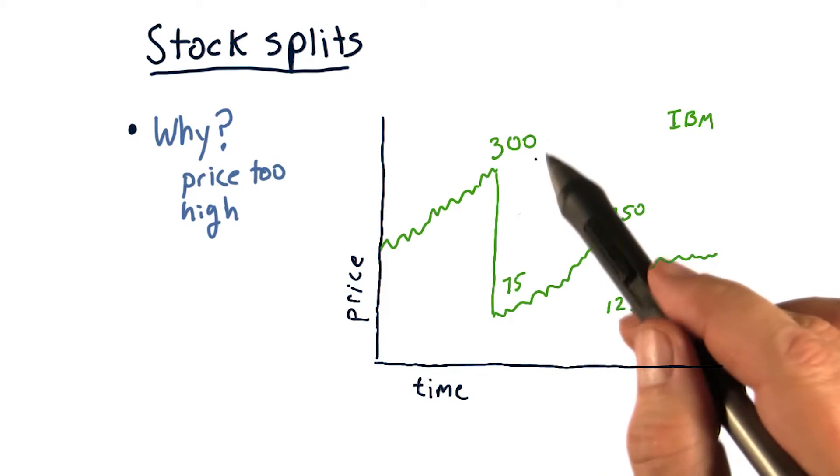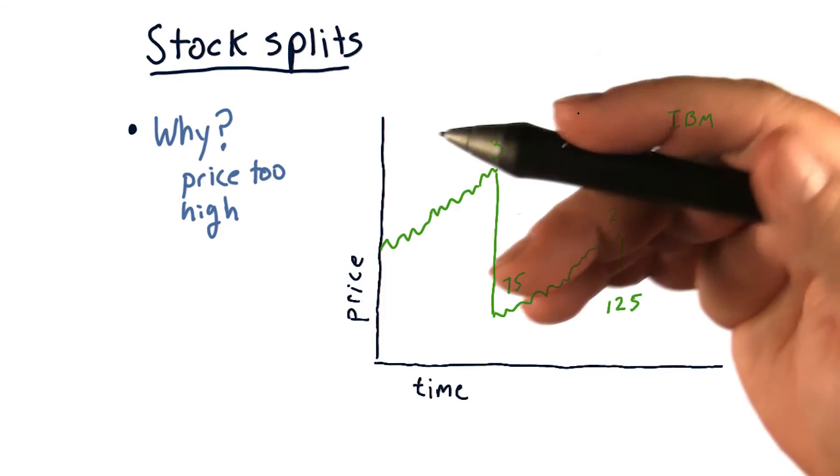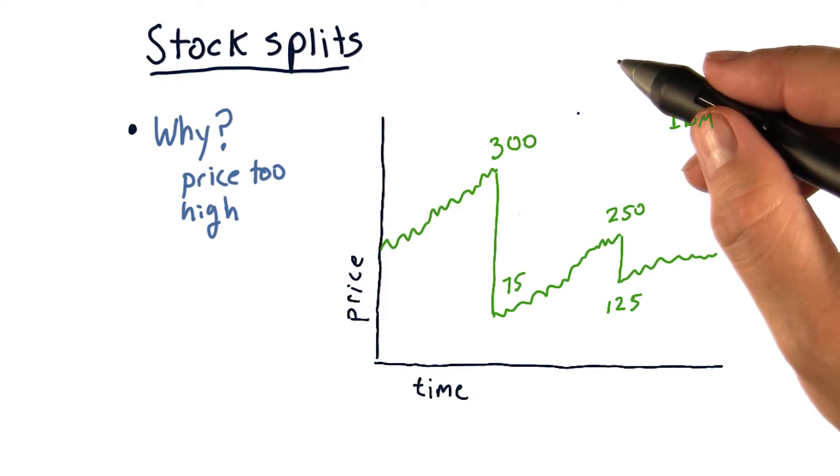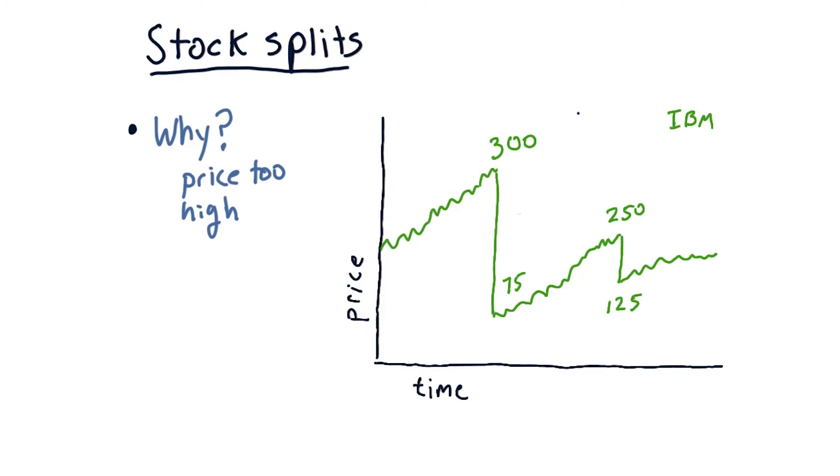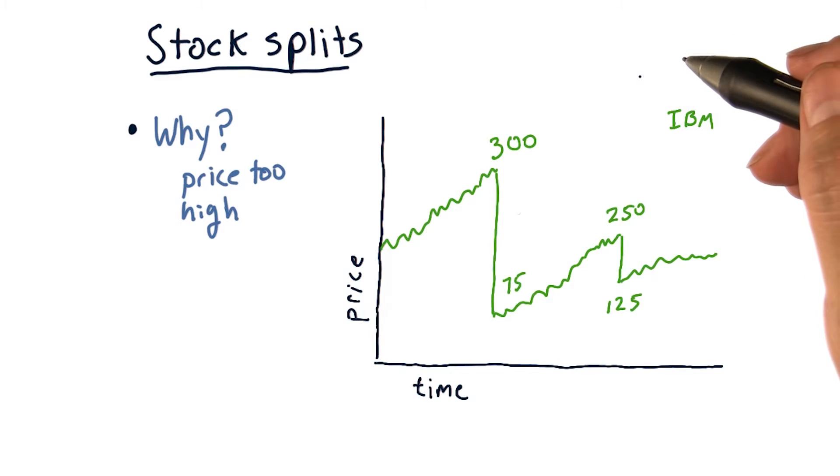Why is a high price a problem? Well, consider for a moment that stock may be above, say, $500 per share. People like to buy stocks in groups of 100. So that means, for instance, it would be $50,000 to buy or sell a block of 100 shares of a $500 stock.